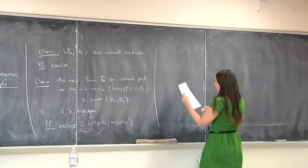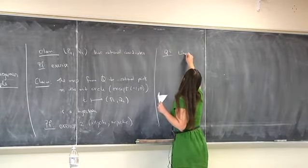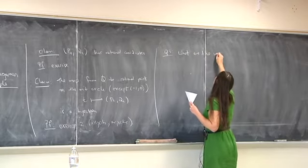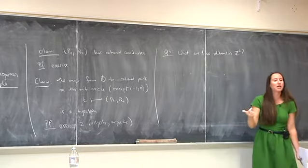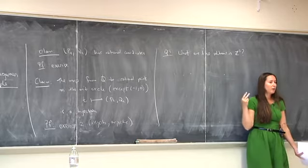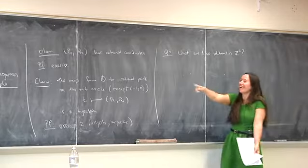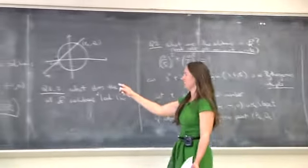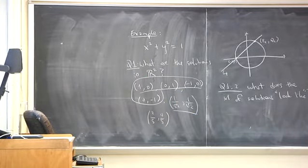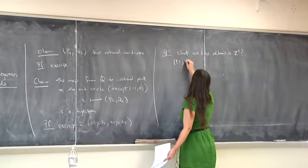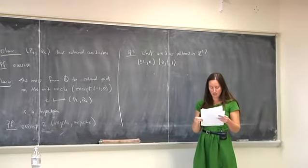Let's ask a stupid question now — Question 3. Why not integers? It's easy: we already have the answer from before. The integer solutions are just ±1, 0 and 0, ±1. Those four points. Done. That was easy.